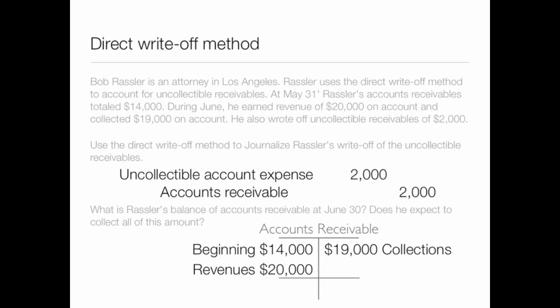The second part of this question is: what is Rassler's balance of accounts receivable at June 30th, and does he expect to collect all of this amount? Our beginning accounts receivable was $14,000, we earned revenues on account of $20,000, collected $19,000, and wrote off $2,000 — a reduction to accounts receivable. So our ending balance is $13,000. Because we are using the direct write-off method, we only write off accounts we do not anticipate collecting. Therefore, Rassler would expect to collect the full $13,000 remaining.